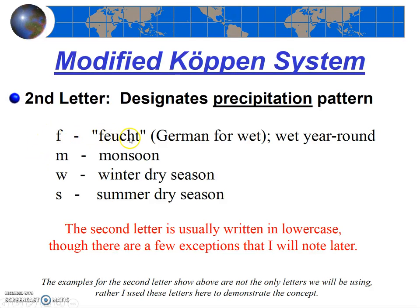The second letter generally refers to precipitation patterns — so it has to do with the amount and timing of the rainfall — and generally the second letter is written in lowercase, though there are a few exceptions. F stands for Feucht, which is the German word for wet, so these are wet climates, wet year-round. M stands for monsoon, so we know they have those incredibly huge summer rainfalls. W is winter dry season, and S is a summer dry season. So the second letter stands for the precipitation pattern.